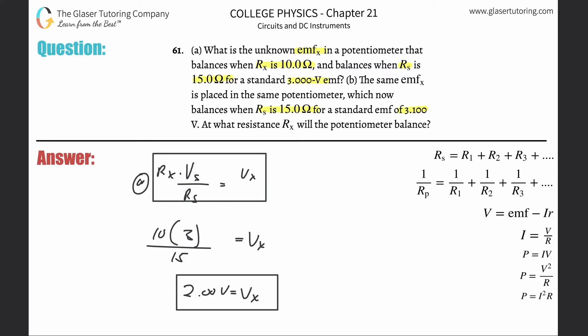It's the same problem, just we're solving for a different variable. V sub s over R sub s equals V sub x over R sub x. We're solving for now R sub x. Cross multiply that out.